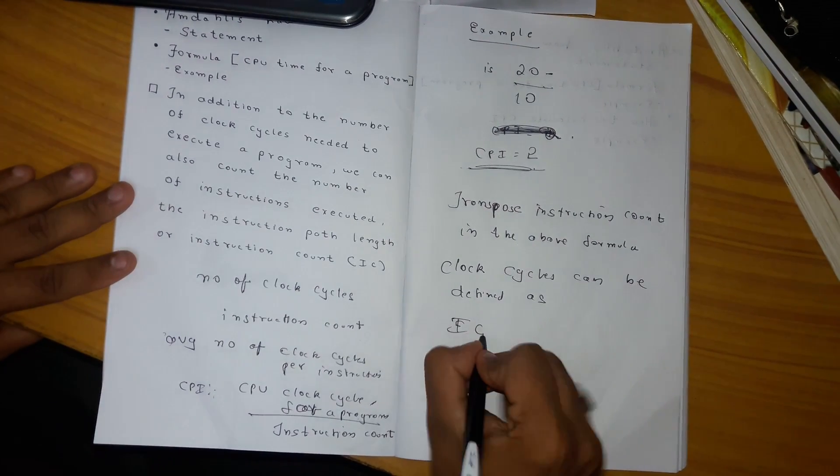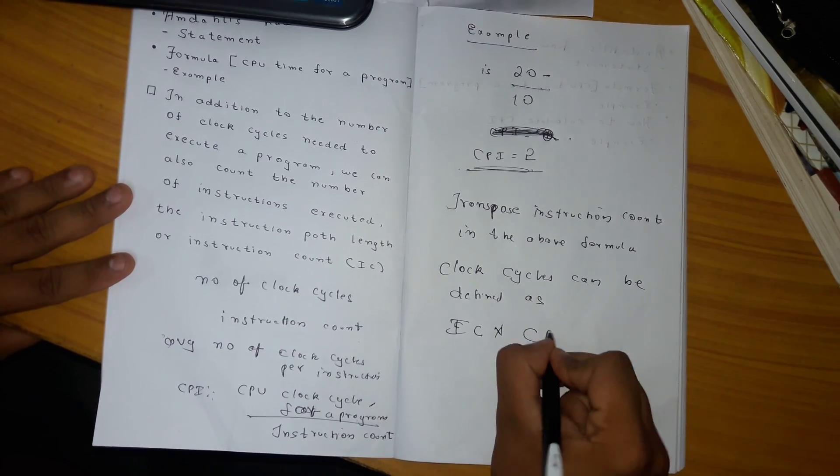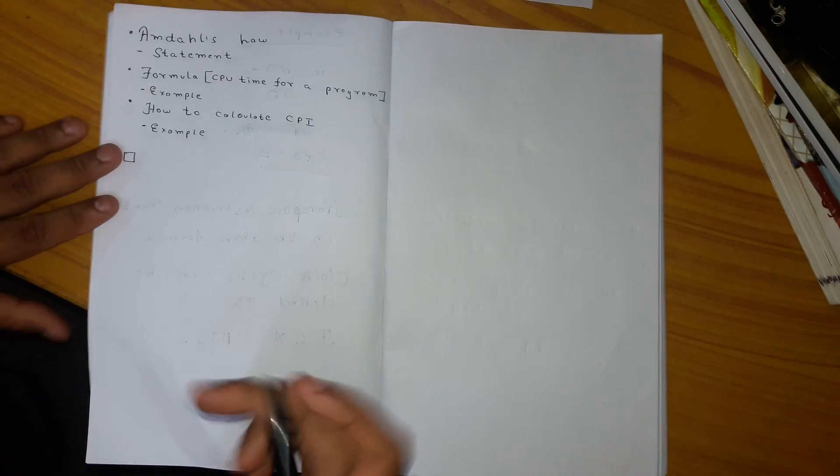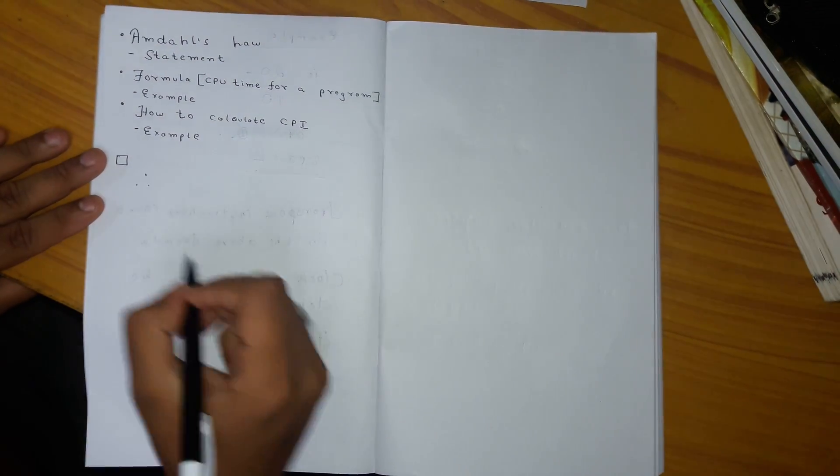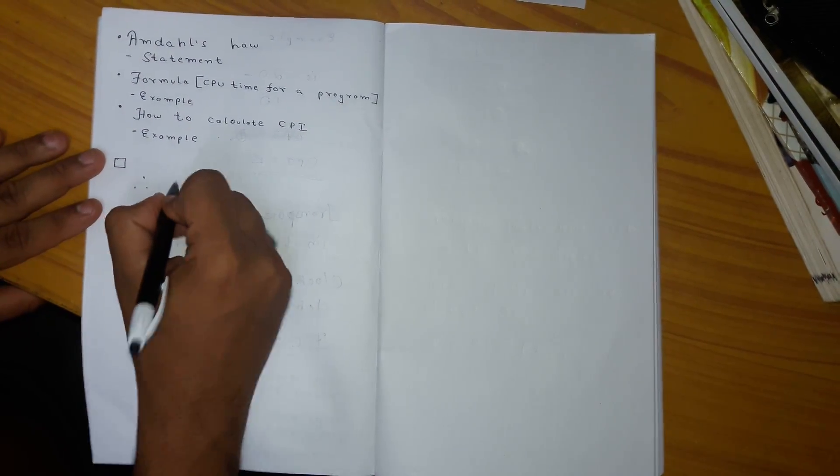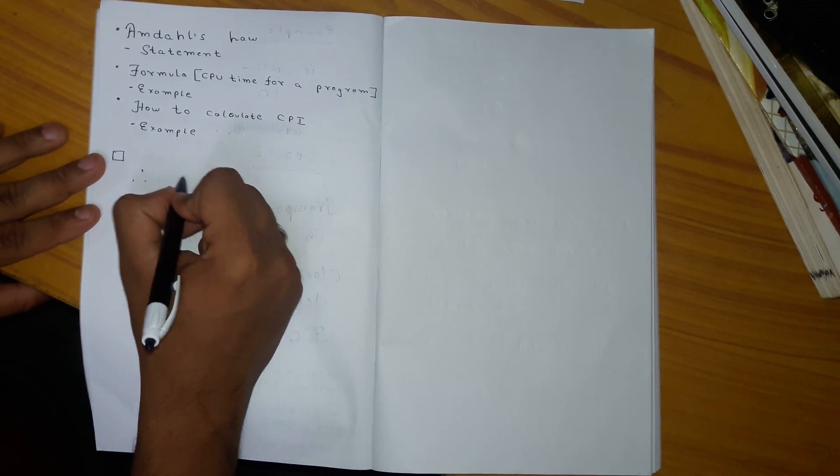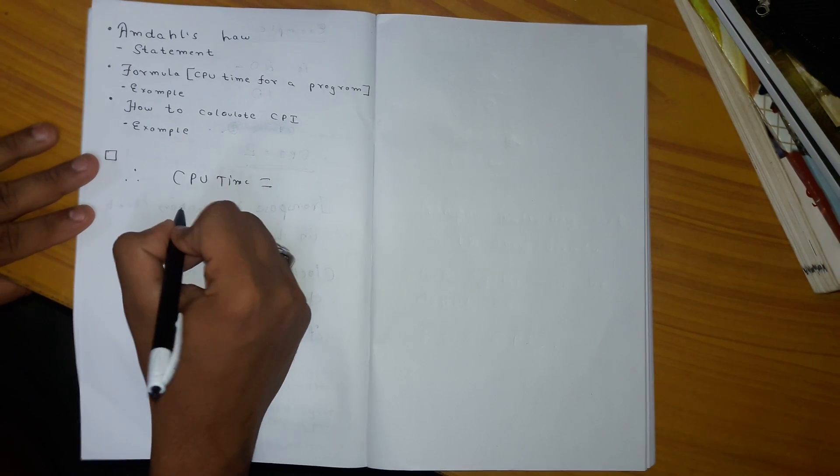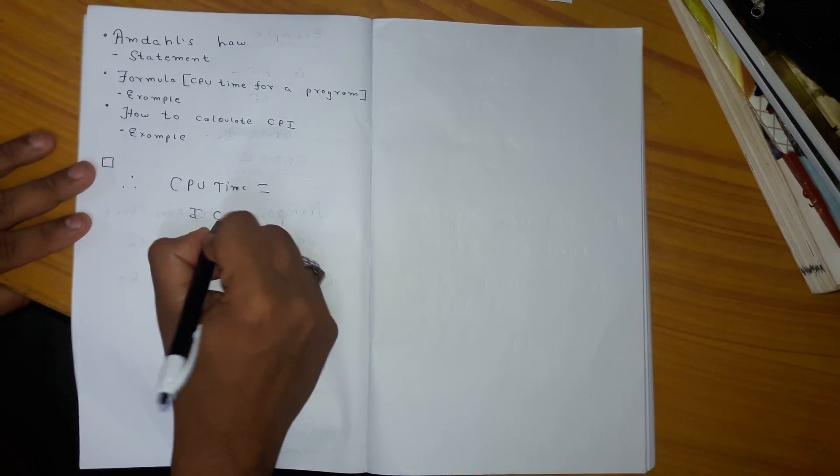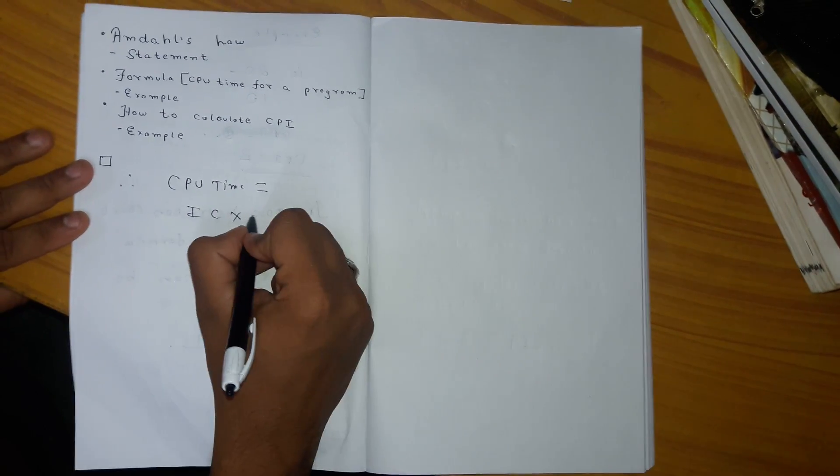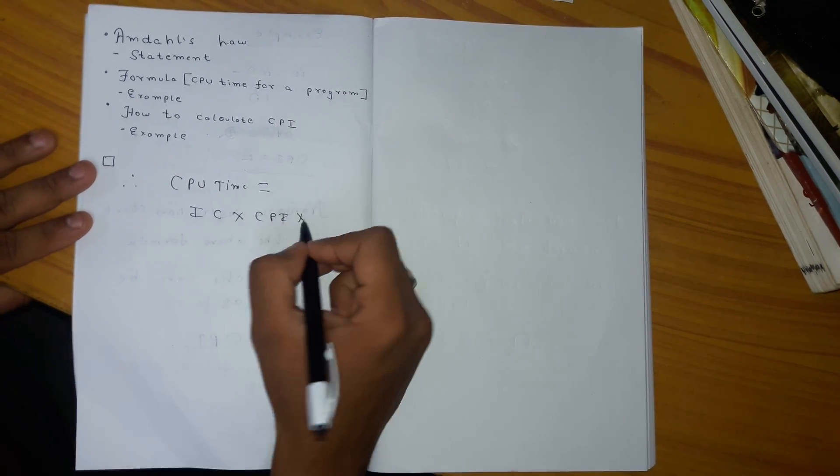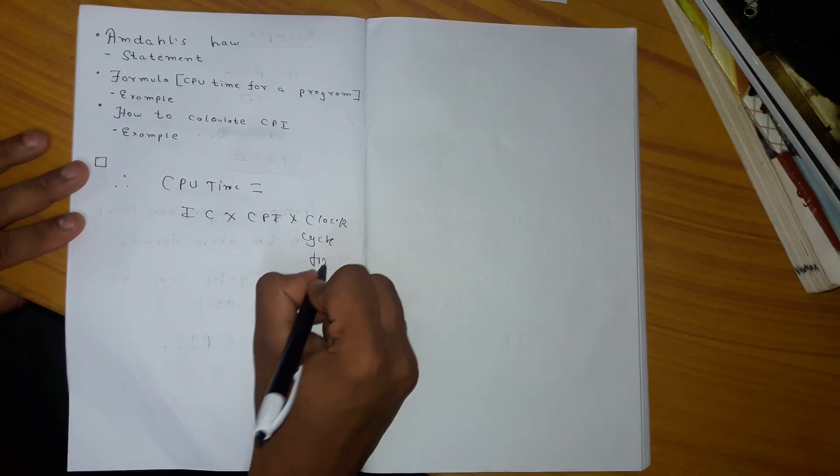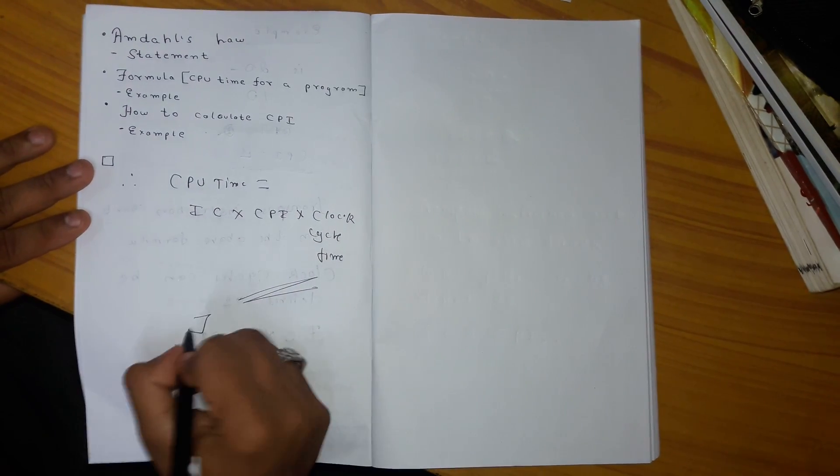CPU clock cycles equals instruction count times CPI. Therefore, CPU time equals instruction count times CPI times clock cycle time. Thank you.